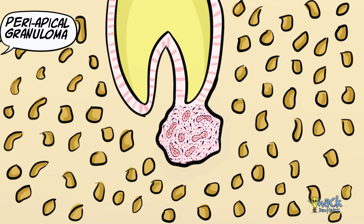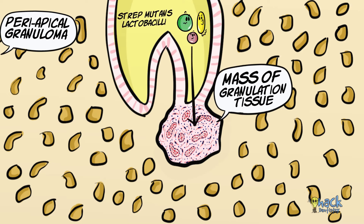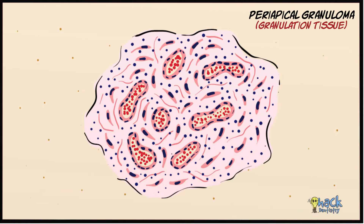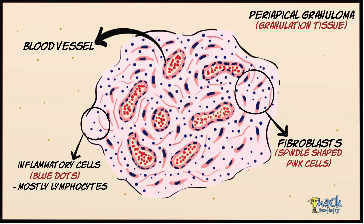Periapical granuloma is a mass of reparative granulation tissue which forms as a defensive reaction to microbial infection seeping into the periapics from an overlying infected tooth. The periapical tissue, in an attempt to heal, reacts by forming granulation tissue, which is basically a loose matrix with numerous small blood vessels and fibroblasts. It also has numerous inflammatory cells which are predominantly lymphocytes interspersed with neutrophils and plasma cells.